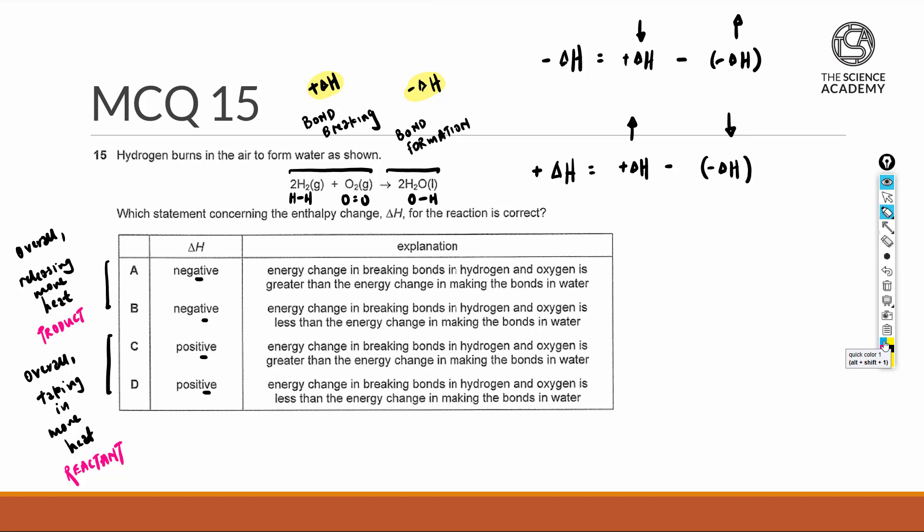So for A, energy change in breaking bonds in hydrogen and oxygen is greater than the energy change in making the bonds in water. So if we're going to talk about exothermic, then the term here, it should have been lower because we want to release more heat, so A itself is not correct.